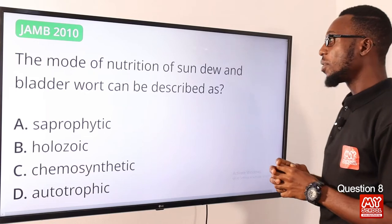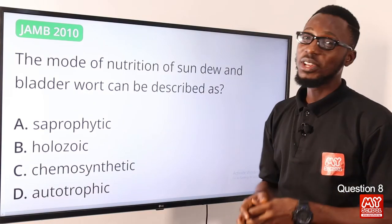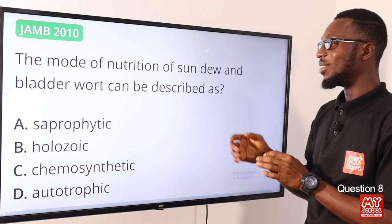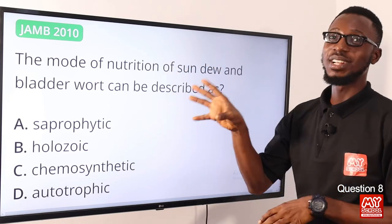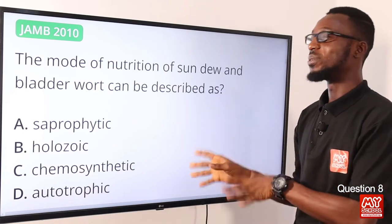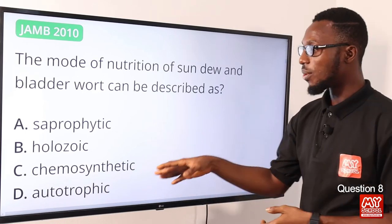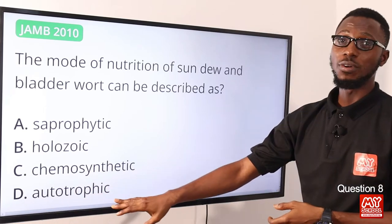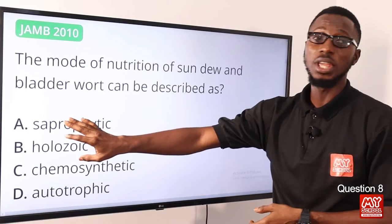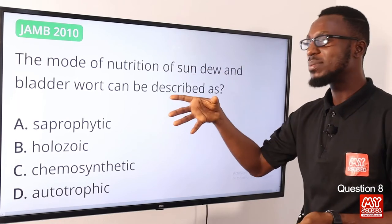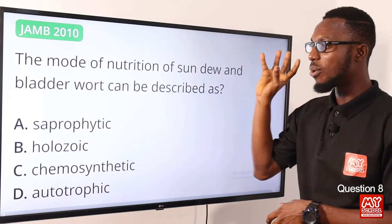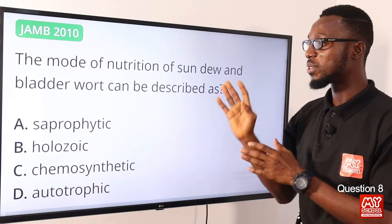Question 8: The mode of nutrition of sundew, bladder wort, and Venus flytrap. These plants actually feed on insects, using different mechanisms to trap them for food — this is referred to as the holozoic form of nutrition. Chemosynthesis and photosynthesis fall under autotrophic nutrition. Saprophytism is found in organisms like fungi. So the correct option is option B, holozoic nutrition.